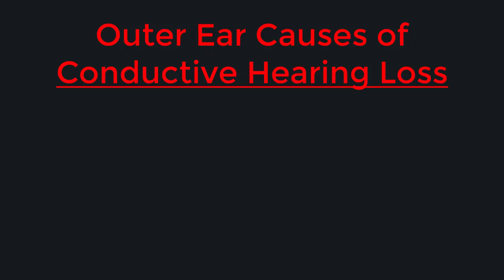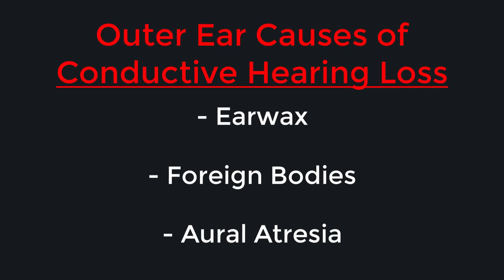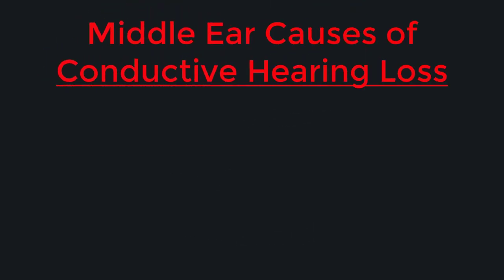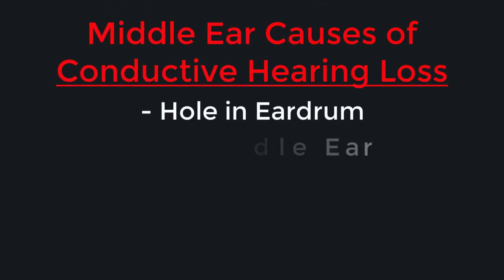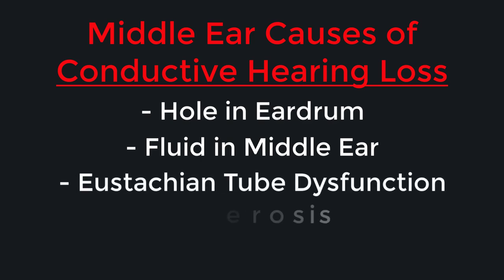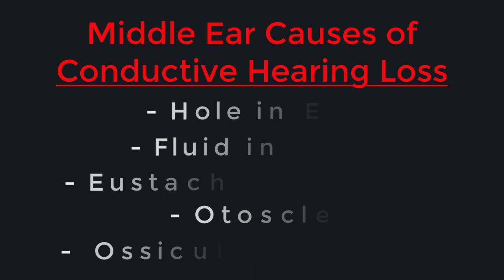Conductive hearing losses can stem from the outer ear due to things like earwax, foreign bodies like cotton leftover from a Q-tip, or even aural atresia, which is the absence of an ear canal. Conductive hearing losses can also result from problems in the middle ear, such as a hole in the eardrum, fluid in the middle ear space, eustachian tube dysfunction, otosclerosis — which is a fusion of the middle ear bones — or ossicular chain discontinuity, where the middle ear bones are not properly connected or aligned.